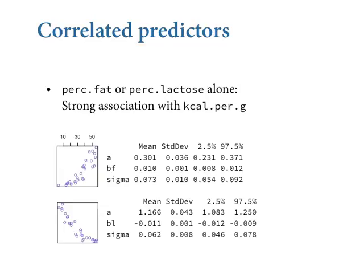Here's a real data example of the same issue — multicollinear, highly correlated predictors that are mostly redundant information. This is a more subtle case from a real dataset. I got this from Dr. Katie Hind, who went to graduate school with me. Katie and her colleagues are interested in milk composition across a bunch of mammals. It turns out we don't know a lot about the evolution of milk composition, so it's an interesting area of work.